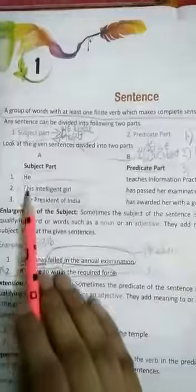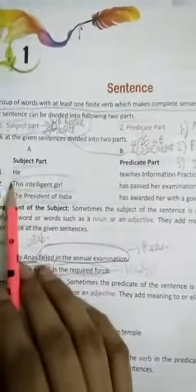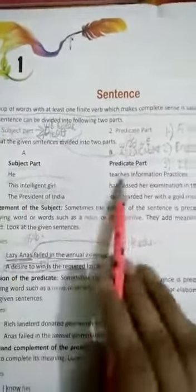So here we have seen some examples. Like here you are seeing 'He teaches information practice.' Who teaches information practice? He. So what is the subject? He. So he is our subject and the rest of the part, that is our predicate. Clear?